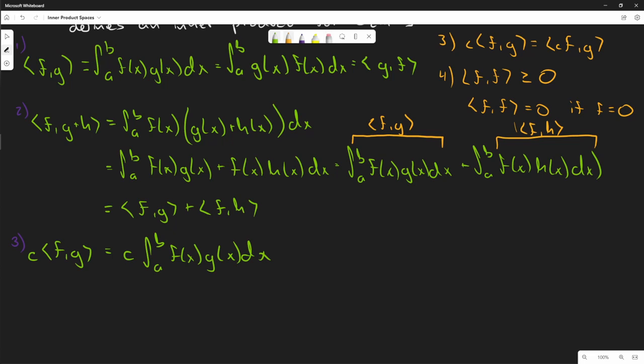If you remember back in calculus, you can put the c inside the integral. So this is the integral from a to b of c·f(x)·g(x) dx, which tells us this is the inner product of cf and g.